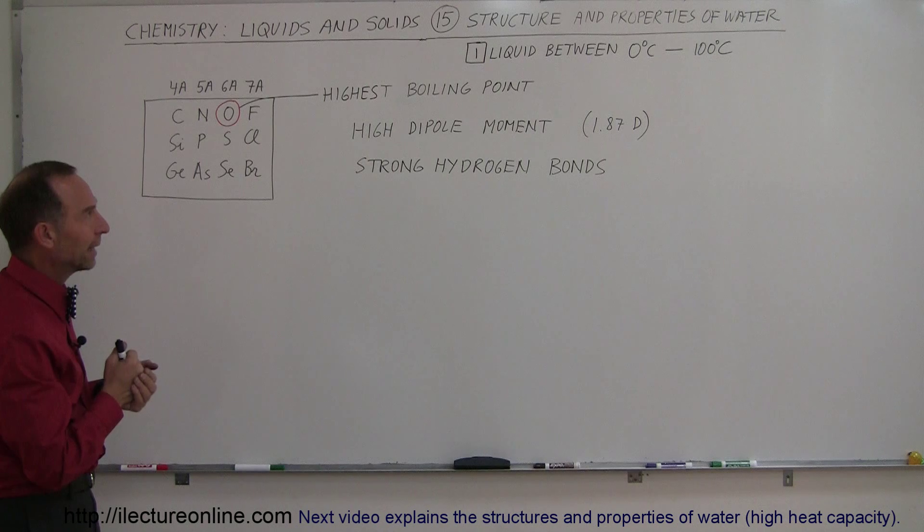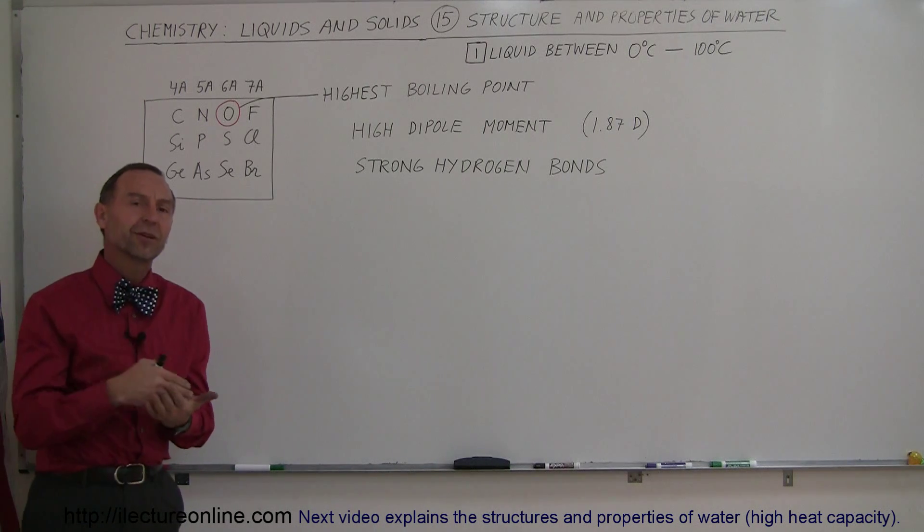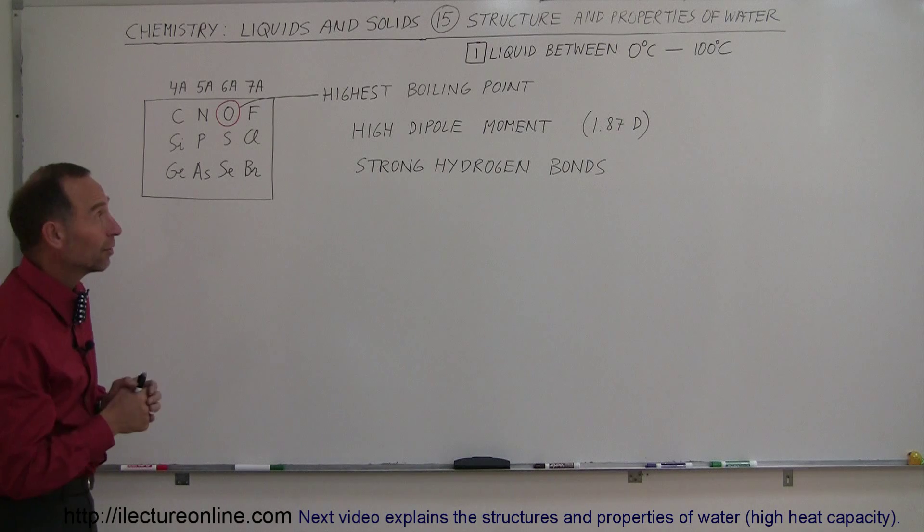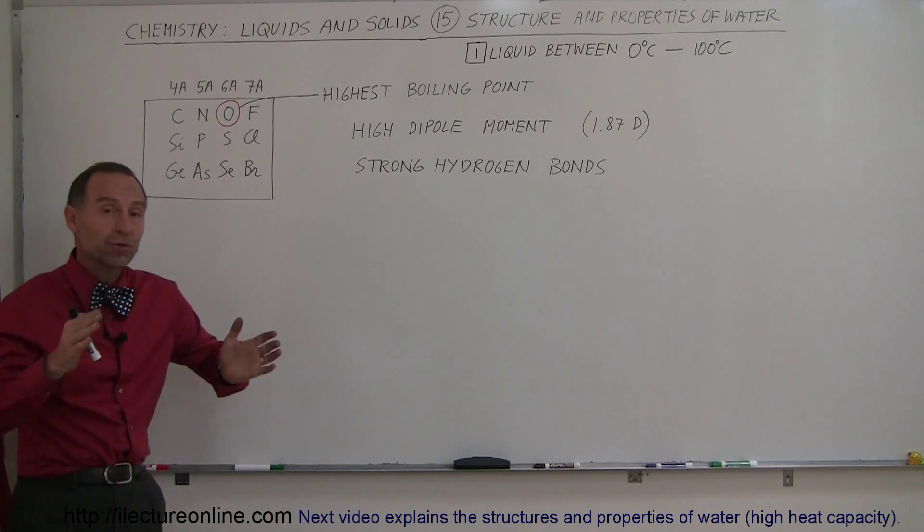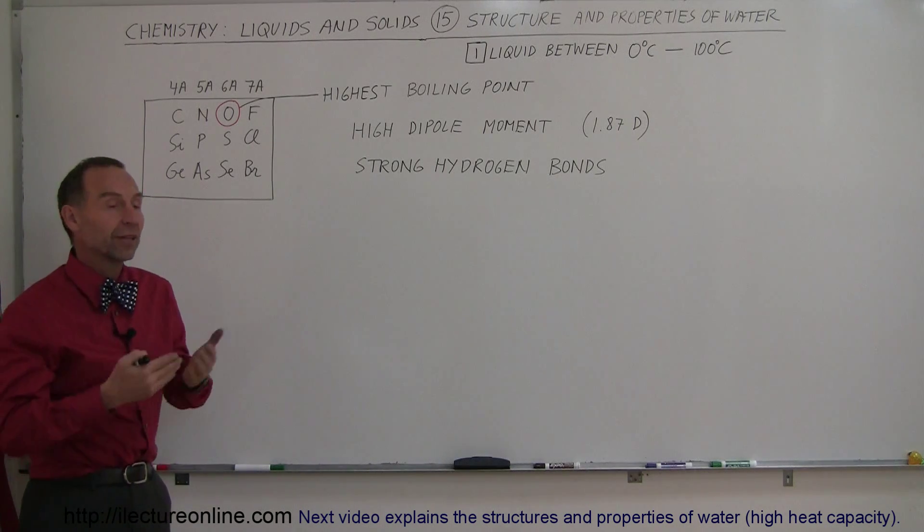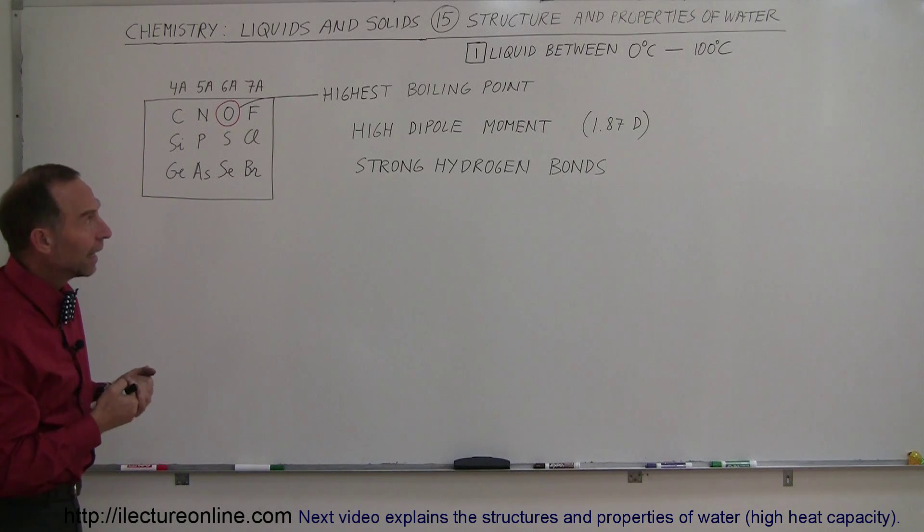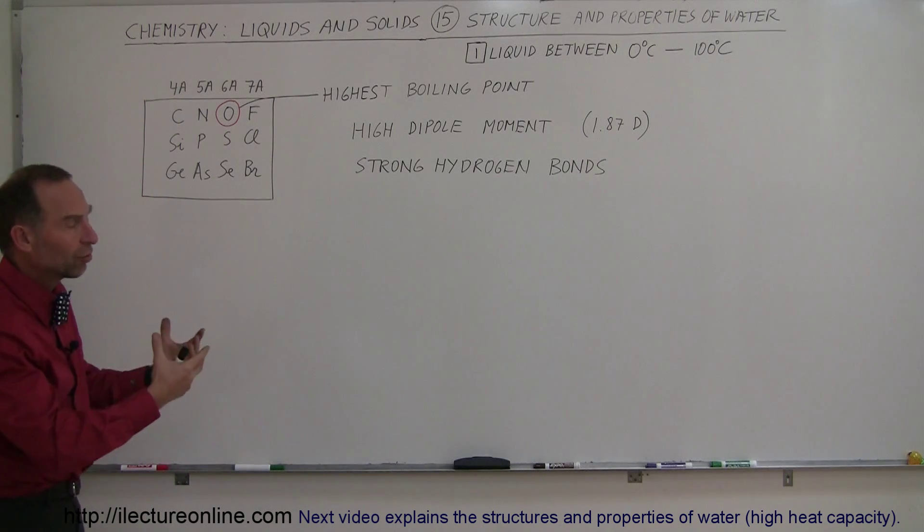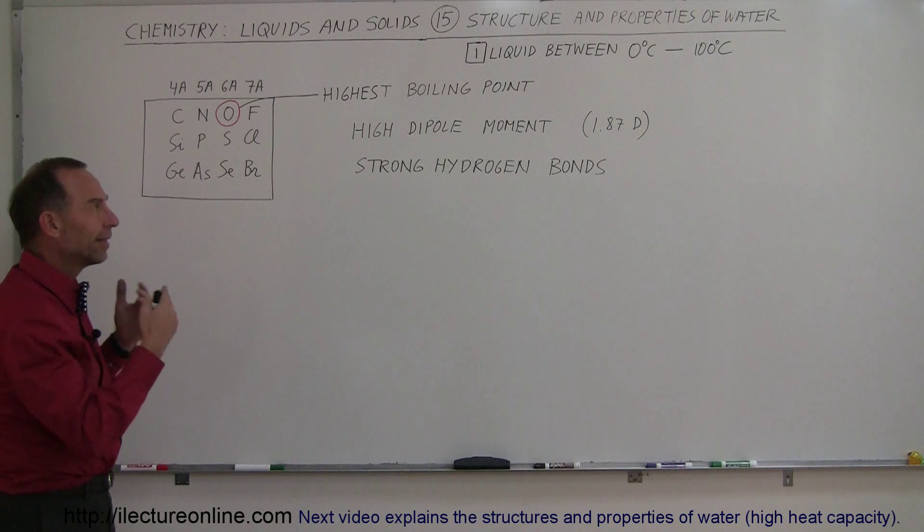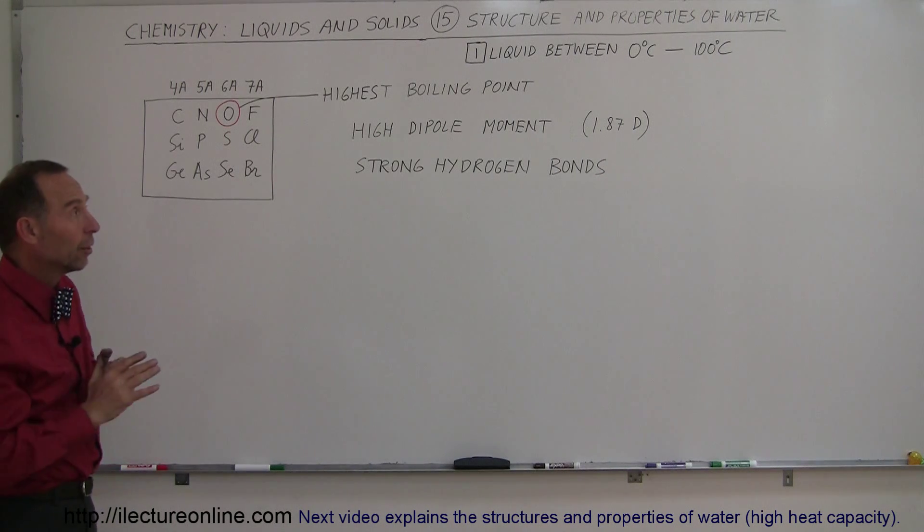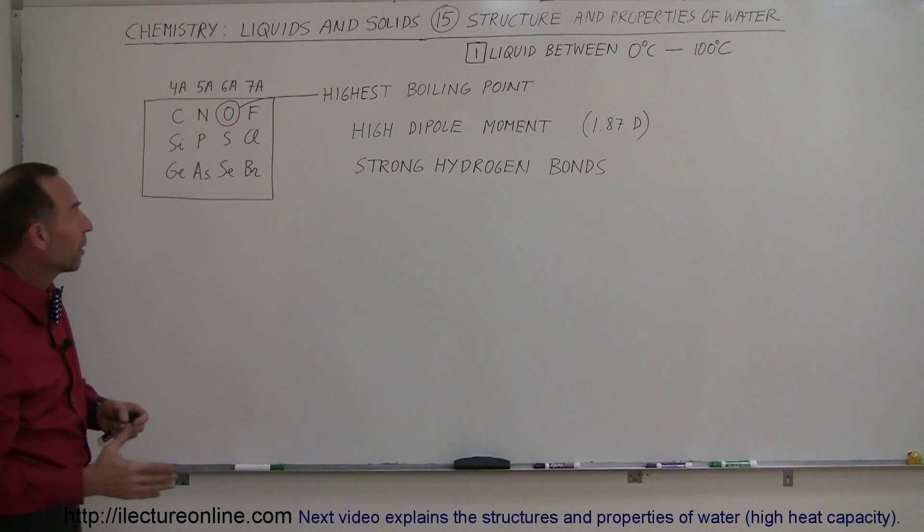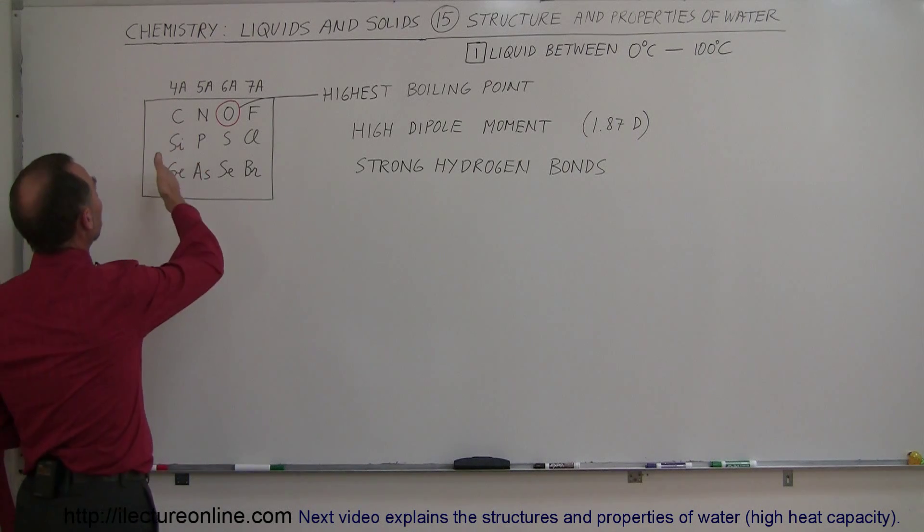The first thing I want to look at is the fact that water is a liquid between zero degrees centigrade and 100 degrees centigrade. That's a temperature that is very comfortable for human beings, animals and plants to live in. So what is so special about water that it's liquid at zero degrees centigrade and 100 degrees centigrade? To emphasize why it's so special, take a look at the group 4A, 5A, 6A and 7A.